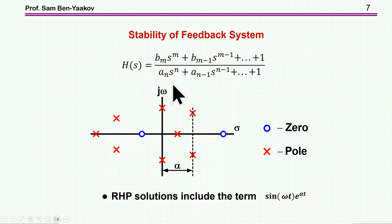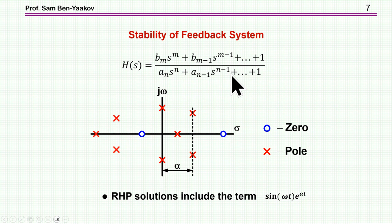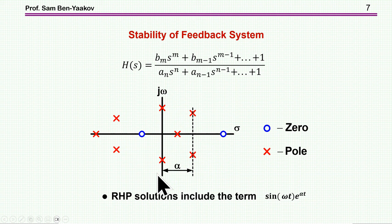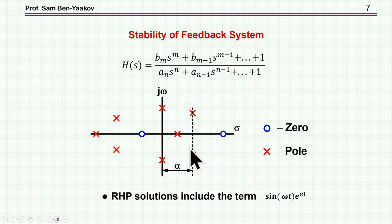If we have a feedback system, we can express the transfer function as a polynomial in the Laplace domain. We have a numerator and denominator, and we can break these polynomials into their roots — zeros and poles, some real, some imaginary. I'm showing the distribution of zeros and poles in the complex plane: the imaginary axis and the real axis, with poles marked as crosses and zeros as circles.